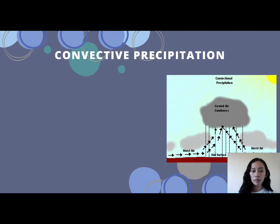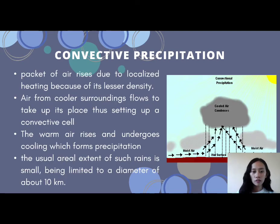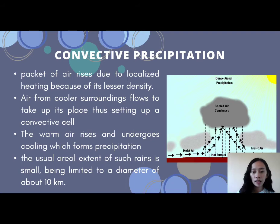The fourth weather system is convective precipitation. Convective precipitation is the process when a pocket of air rises due to localized heating because of its lesser density. Moist air rises upward, and air from cooler surroundings flows in to take its place, setting up a convective cell. The warm air rises and undergoes cooling, which yields precipitation. As the moist air rises and reaches the clouds, it cools and the process of condensation takes place, producing precipitation. The usual aerial extent of such rains is small, being limited to a localized diameter.